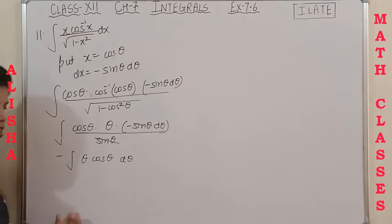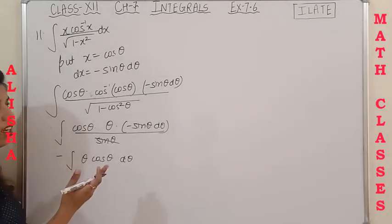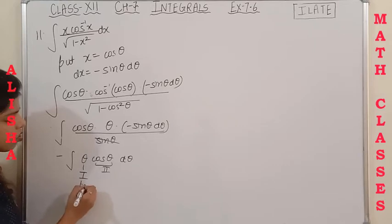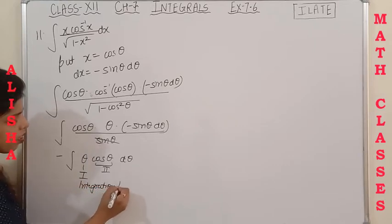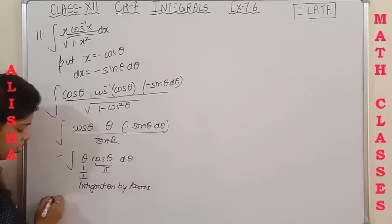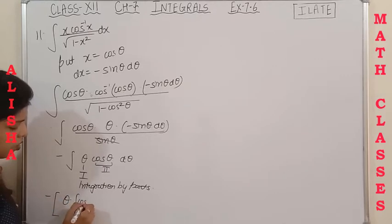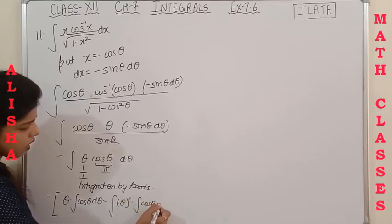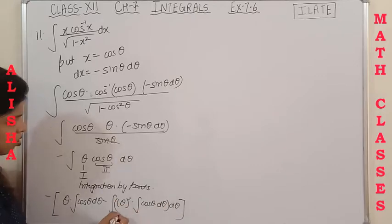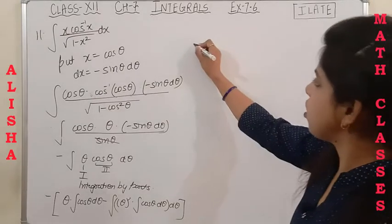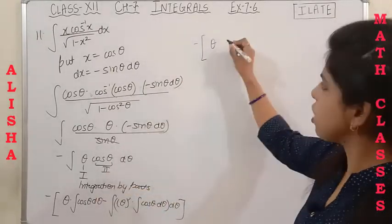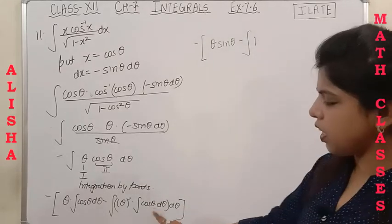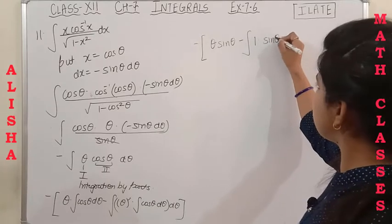Apply the ILATE rule: θ is the first function (algebraic) and cosθ is the second function (trigonometric). Using integration by parts: first function as-is times integration of second function, minus integration of [derivative of first function times integration of second function] dθ. The integration of cosθ is sinθ, and the derivative of θ is 1, so we get θ·sinθ − ∫sinθ dθ.